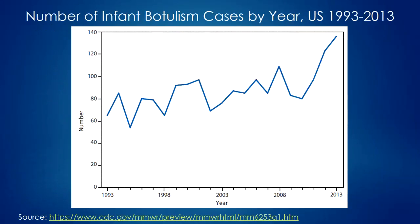One example shows infant botulism cases by year in the U.S. — though this is a count, not a rate, so it doesn't account for differences in underlying population size. Infant botulism differs from adult botulism in that it's not the toxin itself but the ingestion of spores that causes illness, since infants' GI tracts are underdeveloped. It causes flaccid paralysis and neurologic damage, with the only known causes being consuming honey or contacting soil containing the spores — serious but still only around 100 to 150 cases per year.